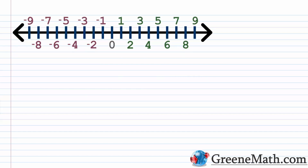So if I was to ask you for the absolute value of the number six, you could find the number six on the number line and count the number of units away it is from zero. Going from six — one, two, three, four, five, six — you'll see that six is six units away from zero on the number line. So the absolute value of six is just six.